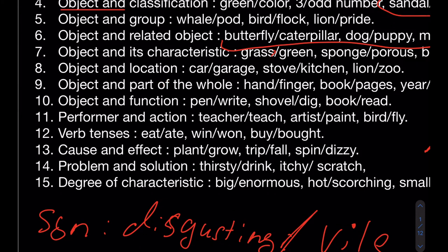Object and location — where something most commonly belongs. A car belongs in a garage; a stove is found in a kitchen. This can be a little tricky, but just remember the type: object and location. When you recognize it, choose a choice that has the object first and location second, or vice versa, matching the question's order.